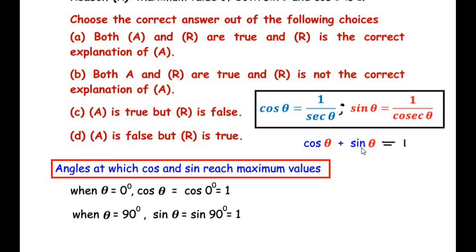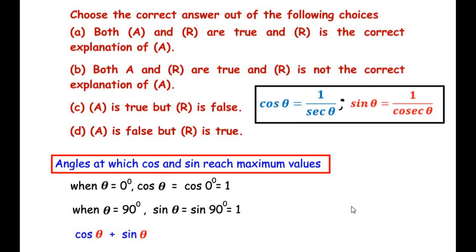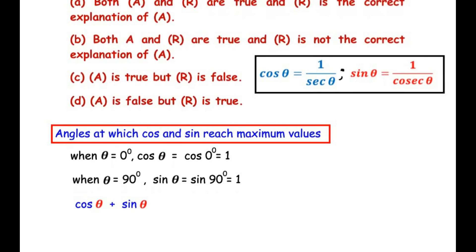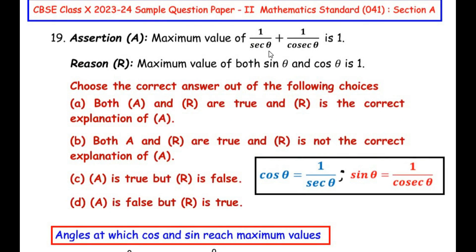For cosθ + sinθ: cosθ reaches its maximum value of 1 when θ = 0°, and sinθ reaches its maximum value of 1 when θ = 90°. So when we add both maximum values together, we should get an answer of 2. But the assertion states that the maximum value of 1/secθ + 1/cosecθ is 1, which is incorrect. We should get 2, not 1. So the assertion is false.